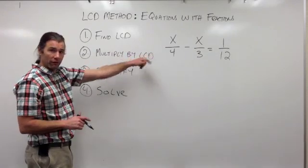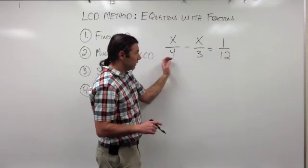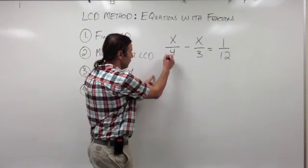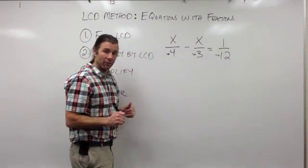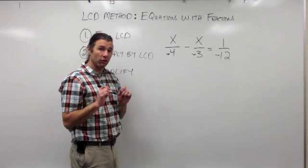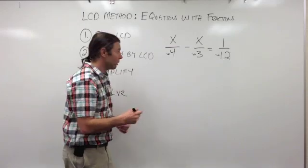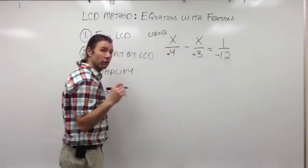Let's take a look at an example here. In my example, I have an equation that contains fractions. If I look at the denominators of all the fractions in my equation, I have 4, 3, and 12 as my denominators. What I want to first do is find the LCD of all of those denominators. Well, the LCD of 4, 3, and 12 is just 12. So my LCD is 12. That's the first step.